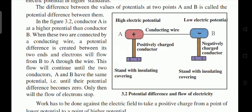Conductor A is at higher potential and conductor B is at lower potential. When these two conductors are connected by a conducting wire, electrons will flow from B to A through the wire. This flow will continue until conductors A and B have the same potential — only then will the flow of electrons stop.